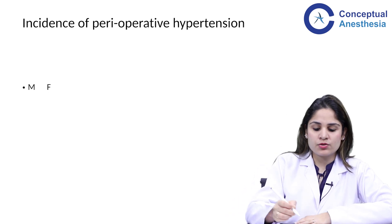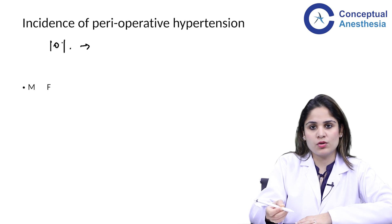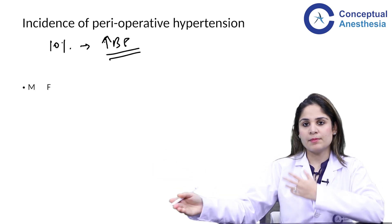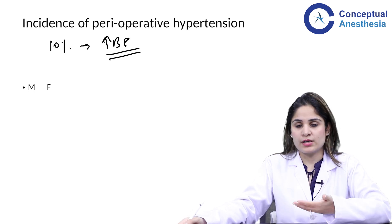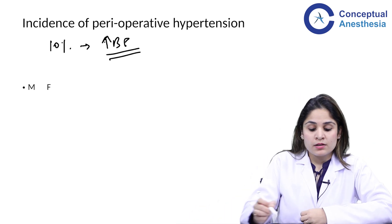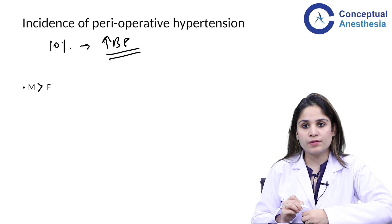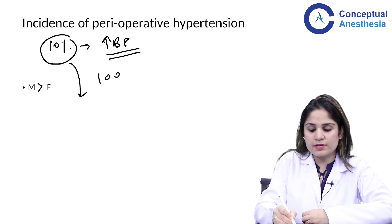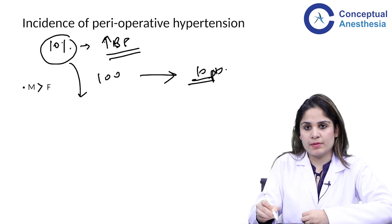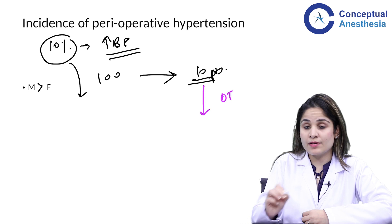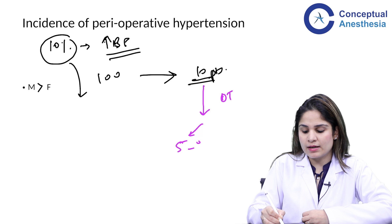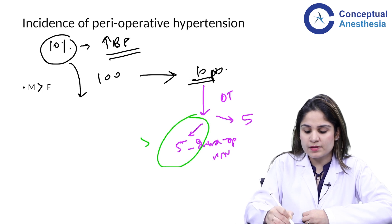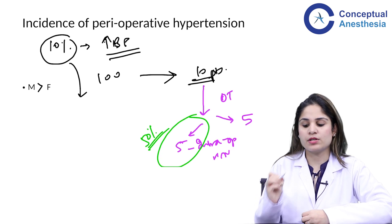What is the incidence of perioperative hypertension? At least 10% of patients coming to the OPD in pre-anesthesia clinic end up having high blood pressure. It is seen more often in males compared to females. Out of these 10% patients — suppose I saw 100 patients in the OPD today and 10 had high blood pressure — if I take these 10 patients to the OT without optimizing any of them, at least 5 of them will have intraoperative hypertension. So 50% of patients you don't optimize prior to surgery will end up having intraoperative hypertension.